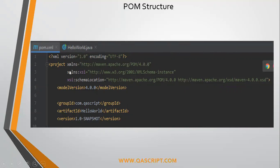Let's look at different parts of this XML file. At the beginning, as you see, it's the XML information and the project information, which is outside the project tag, but still it's part of the Maven project. It defines a Maven project.